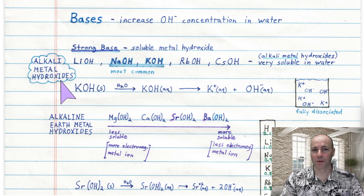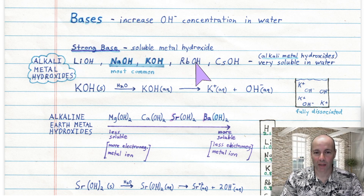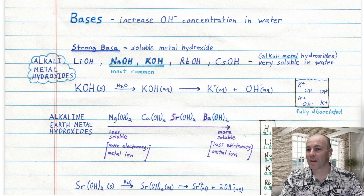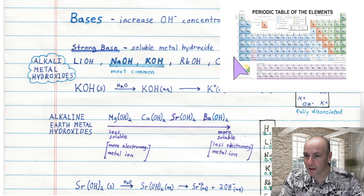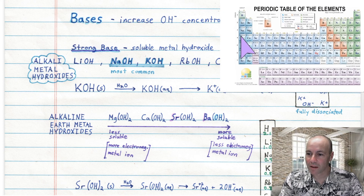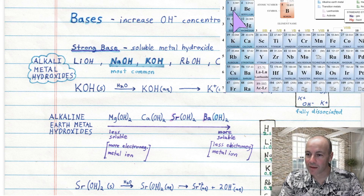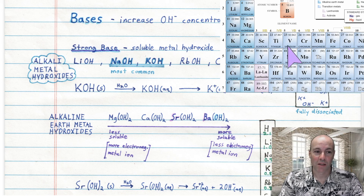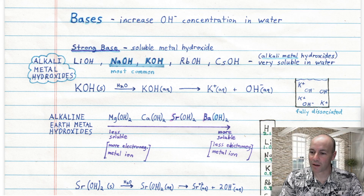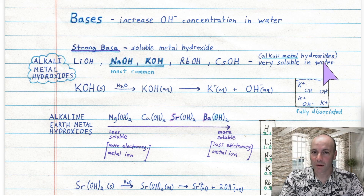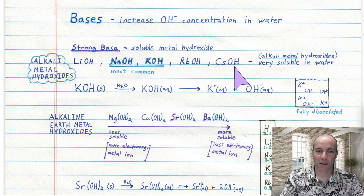Take the alkali metal hydroxides for instance: lithium, sodium, potassium, rubidium, and cesium hydroxide. The alkali metals are in group one of the periodic table — so here they are, lithium, sodium, potassium, and on. Those are the alkali metal hydroxides, and they are very soluble in water, so these are all strong bases.